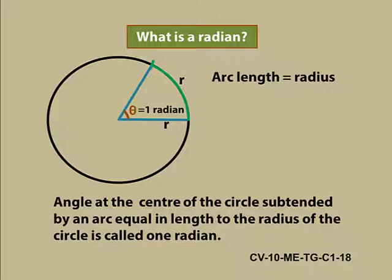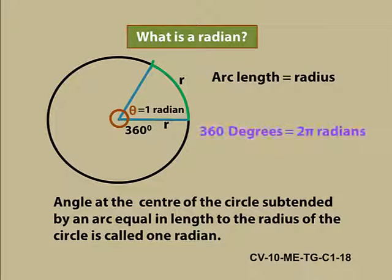Now consider the angle formed at the center. It is the whole angle which is 360 degrees. Which arc subtends this angle? Yes, it is subtended by the circumference of the circle. So we can write as 360 degrees is equal to 2 pi radians. That is 180 degrees is pi radians.